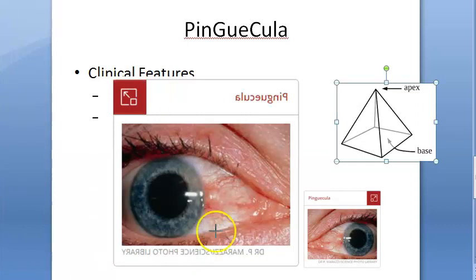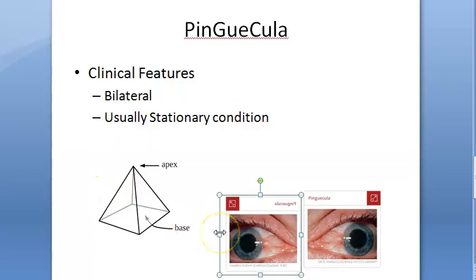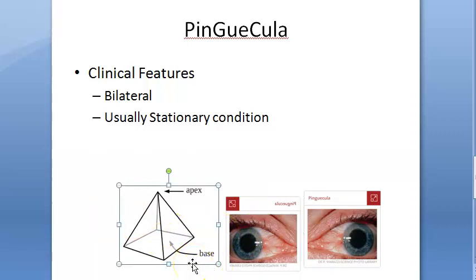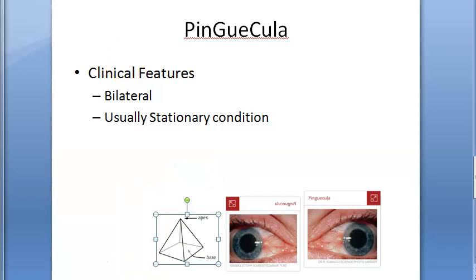Usually, the nasal side is affected first — you can see it clearly in the image — and then the temporal side is affected. When the conjunctiva is congested, the pinguecula stands out as an avascular prominence. So it appears as a triangle with its apex away from the cornea, first appearing on the nasal side, then the temporal side.